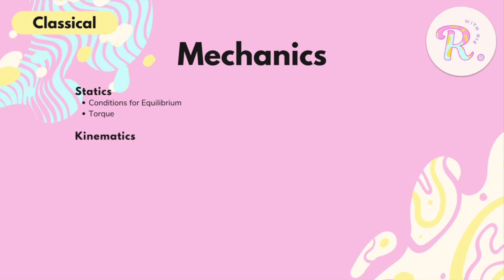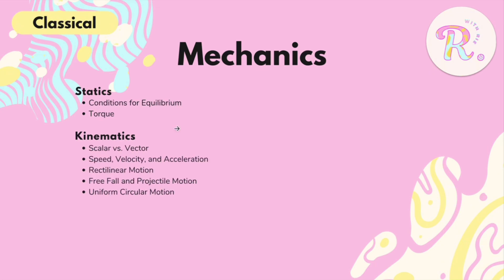Another topic under mechanics is kinematics — the branch of physics that deals with motion without considering the forces that cause it. We have scalar versus vector quantities, speed versus velocity, and acceleration. We also have rectilinear motion, free fall — some parts of the free fall formula are included in projectile motion — and lastly, uniform circular motion, otherwise known as centripetal motion.